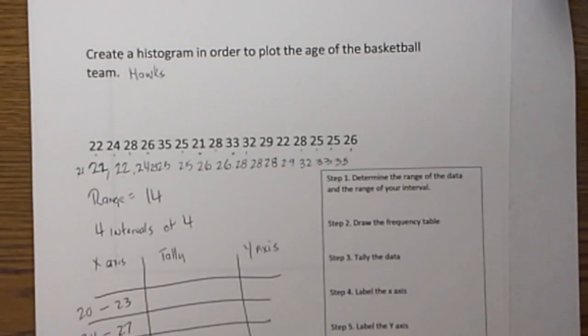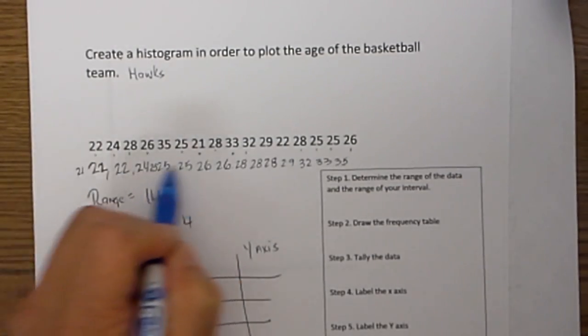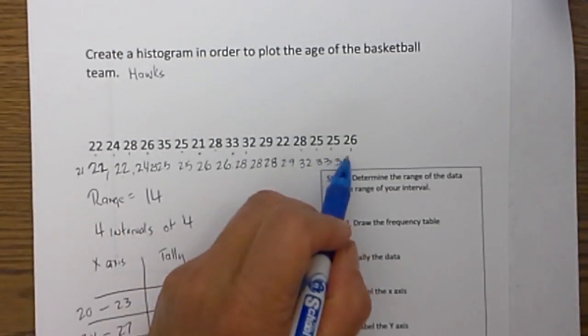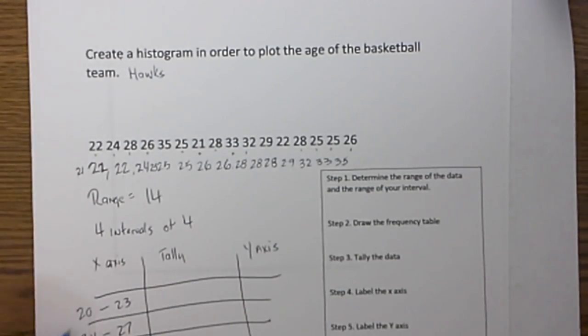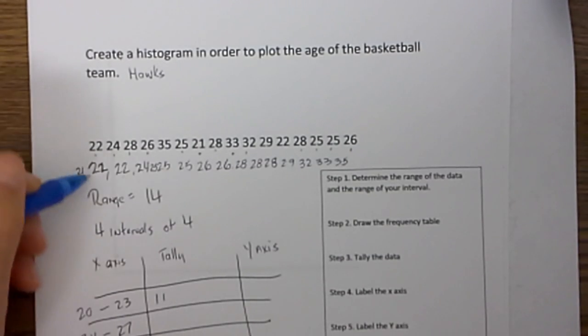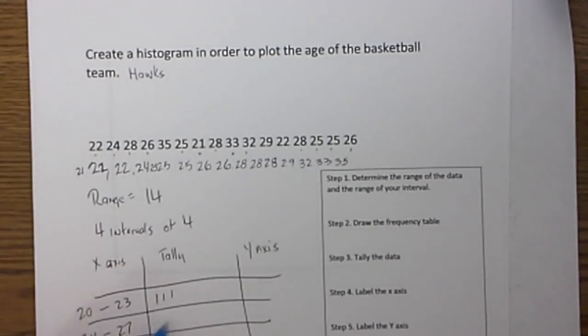So now I am going to do a tally. 20 through 23, and notice that if it is written in order from lowest to greatest, it is easy to find this. I can see that I have 1, 2, 3, and so the tally is 3, so the y axis is going to be 3.